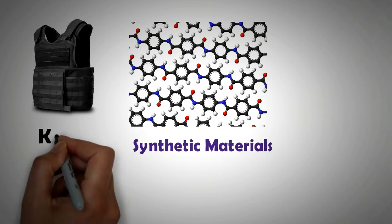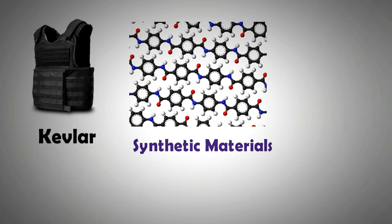For example, Kevlar is a synthetic material that is used for body armor and is much lighter and more effective than its metallic counterparts.